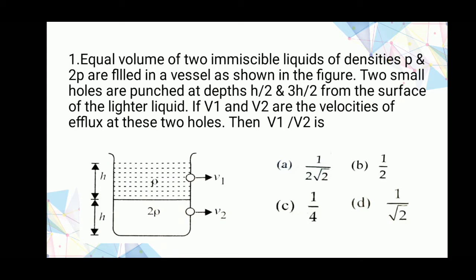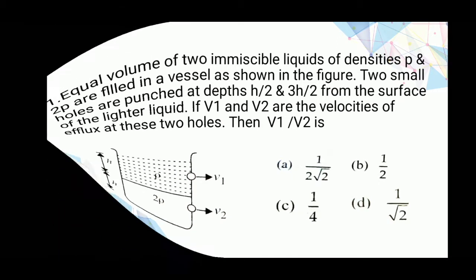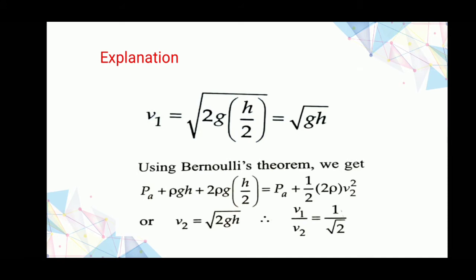So here we are asked to find the ratio of the velocities of efflux from these two heights. First we'll find v1 and v2. We can find v1 by the formula root of 2gh where h given here is h/2, and then we can apply these values in Bernoulli's theorem to find v2. Once v1 and v2 values are found, we can substitute them and find the ratio to be 1/root 2.